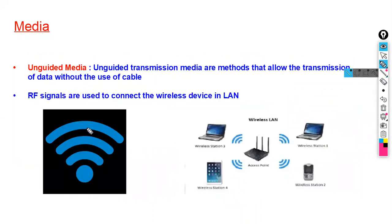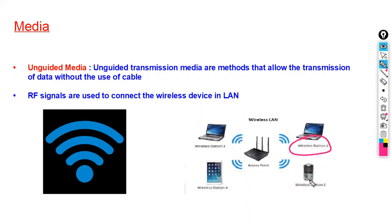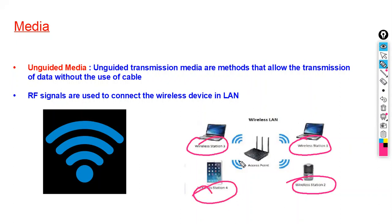Unguided transmission media are methods that allow the transmission of data without the use of cable. So you have some wireless devices like wireless station 1, wireless station 2, wireless station 3, wireless station 4, and you want to make the communication between these wireless devices.